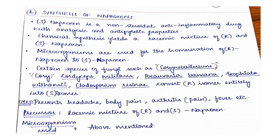Another optically pure drug is naproxen. Naproxen is an anti-inflammatory drug with analgesic and antipyretic properties — analgesic meaning a painkiller, and antipyretic to reduce fever. Chemical synthesis yields a racemic mixture of R and S, but we use microorganisms for the isomerization of R to S. Certain species of fungi such as Cordyceps, Beauveria, and Cladosporium are able to convert the R isomer into S.